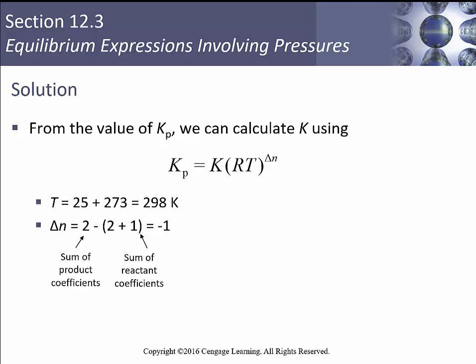From the value of KP, we can calculate a regular old KC using our relationship between KP and KC. So KP is KC times RT to the delta n. T is easy. We're going to convert that into Kelvin pretty quickly. We were given this value of KP. We know R. We know T. We need to figure out what delta n is.